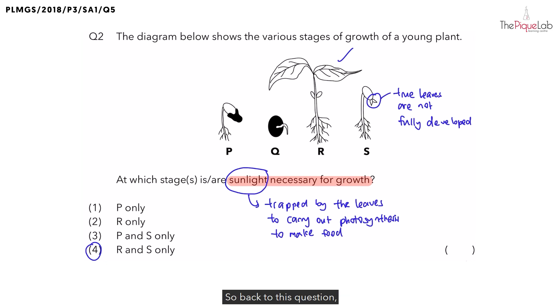Back to this question. Which is the only stage that needs sunlight to grow? It will be stage R only. Therefore, the correct answer should be option 2.